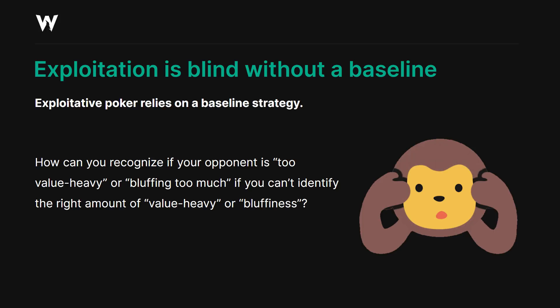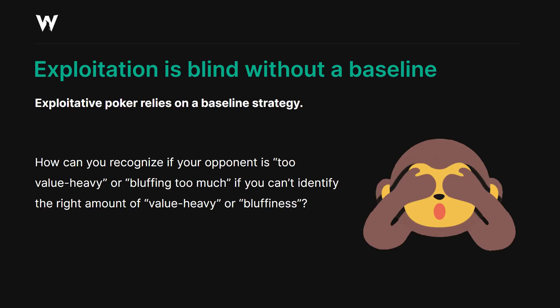Let's talk about exploitation for a moment. I said earlier that exploitation is blind without a baseline. A lot of players, particularly those not really familiar with GTO, will disagree with this. But how can you recognize if your opponent is too value heavy or bluffing too much if you can't identify the correct amount of value heaviness or bluffiness? What you're actually doing is playing by feel — playing according to feedback you receive from your particular player pool, which might be too passive, too aggressive, too loose, or too tight.